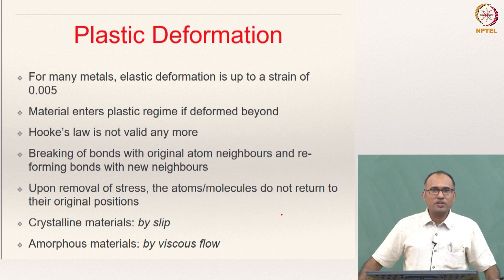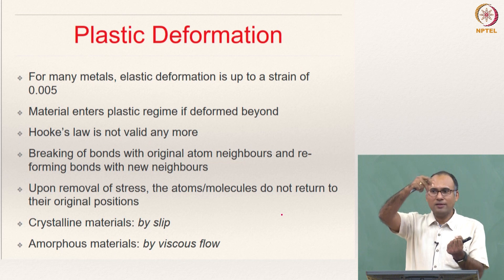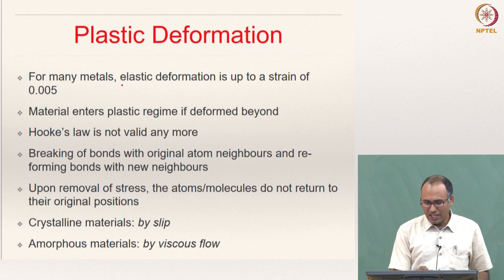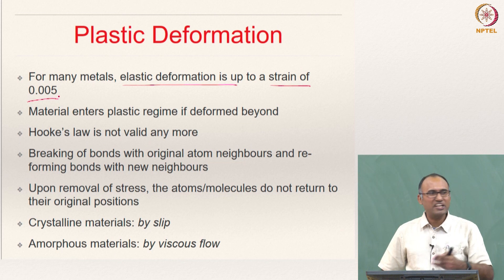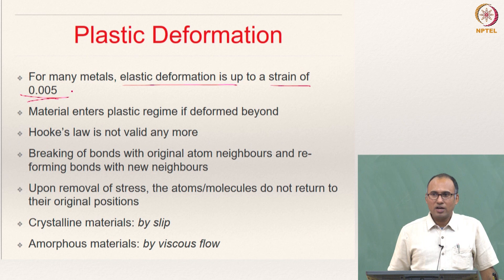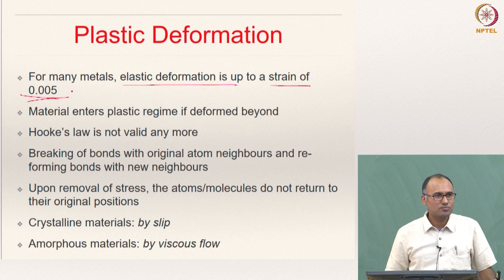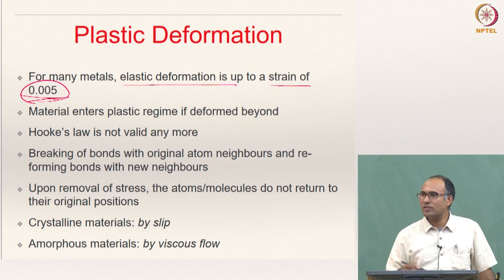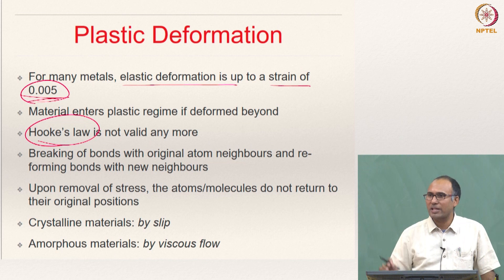Now let us move on to plastic deformation. As you are loading your specimen beyond the elastic limit, the material gets into the plastic regime — that means you are activating the dislocation motion and the material plastically deforms. For many metals, the elastic deformation is only up to a strain of 0.005; beyond that strain it will usually be plastic, but that is only a thumb rule. When you deform your material beyond this elastic limit, that is when the plastic deformation starts, and the moment plastic deformation starts, Hooke's law is no longer applicable — that means sigma equal to E times epsilon cannot be used.